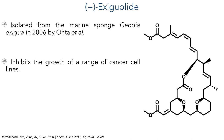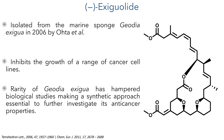Initial investigations into this compound showed that it could inhibit the growth of a wide range of cancer cell lines. However, the rarity of the marine sponge has hampered biological studies, making it necessary to develop a robust approach to synthesizing this molecule in order to further elucidate its anti-cancer properties.